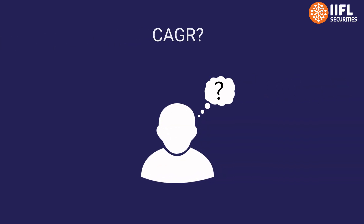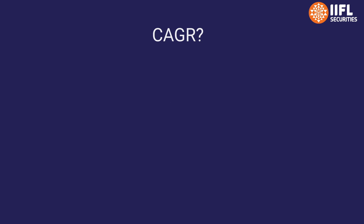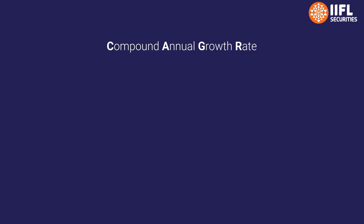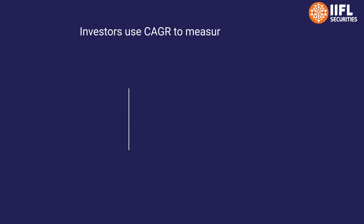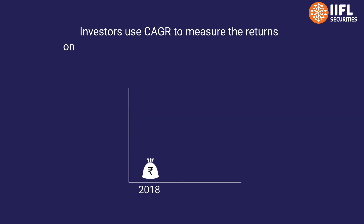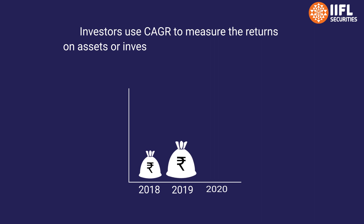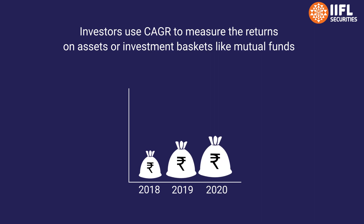Hello investors, today we will break down the term CAGR. CAGR ka full form hain compound annual growth rate. Investors use CAGR to measure the returns on assets or investment baskets like mutual funds over periods longer than one year.